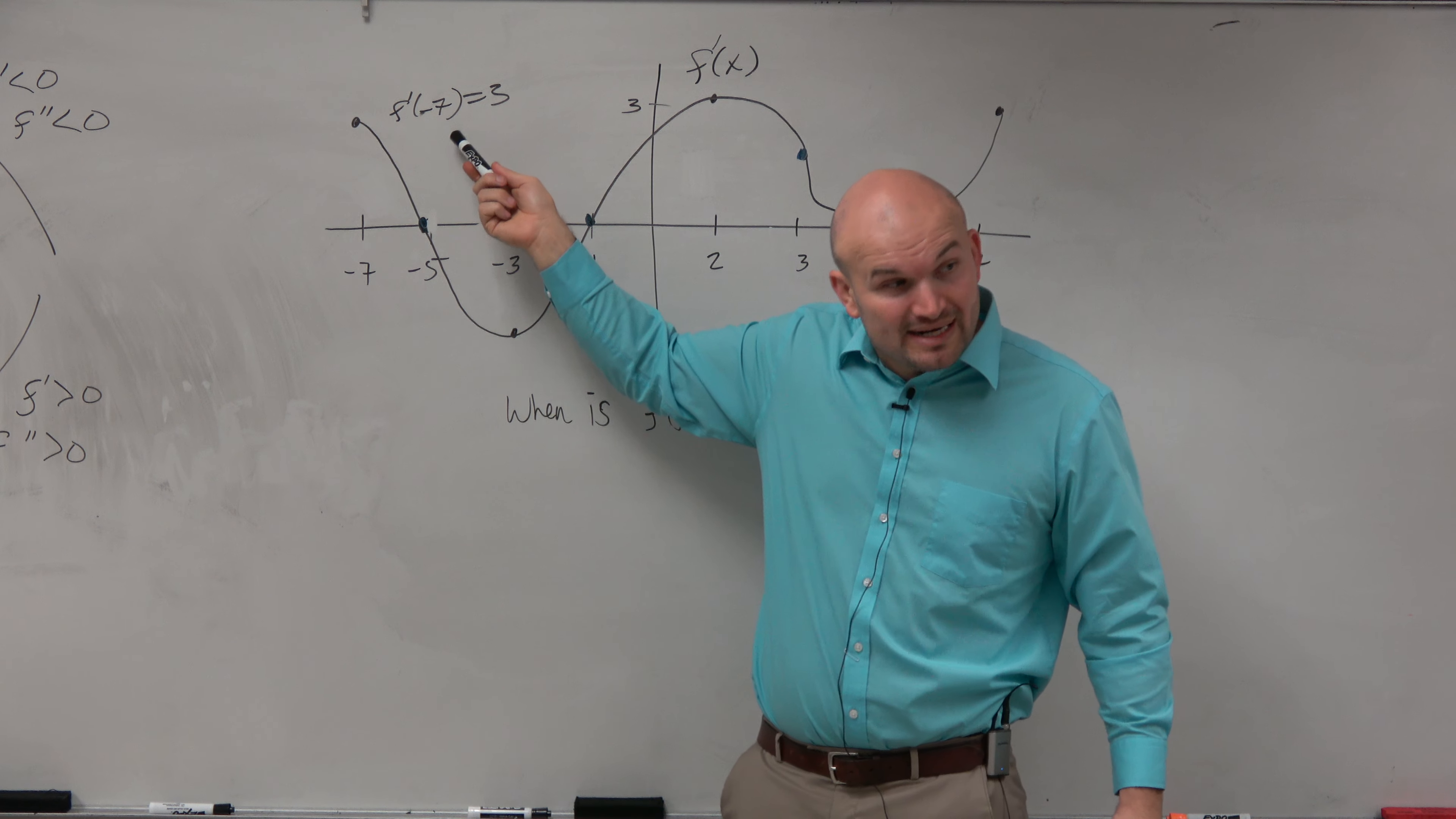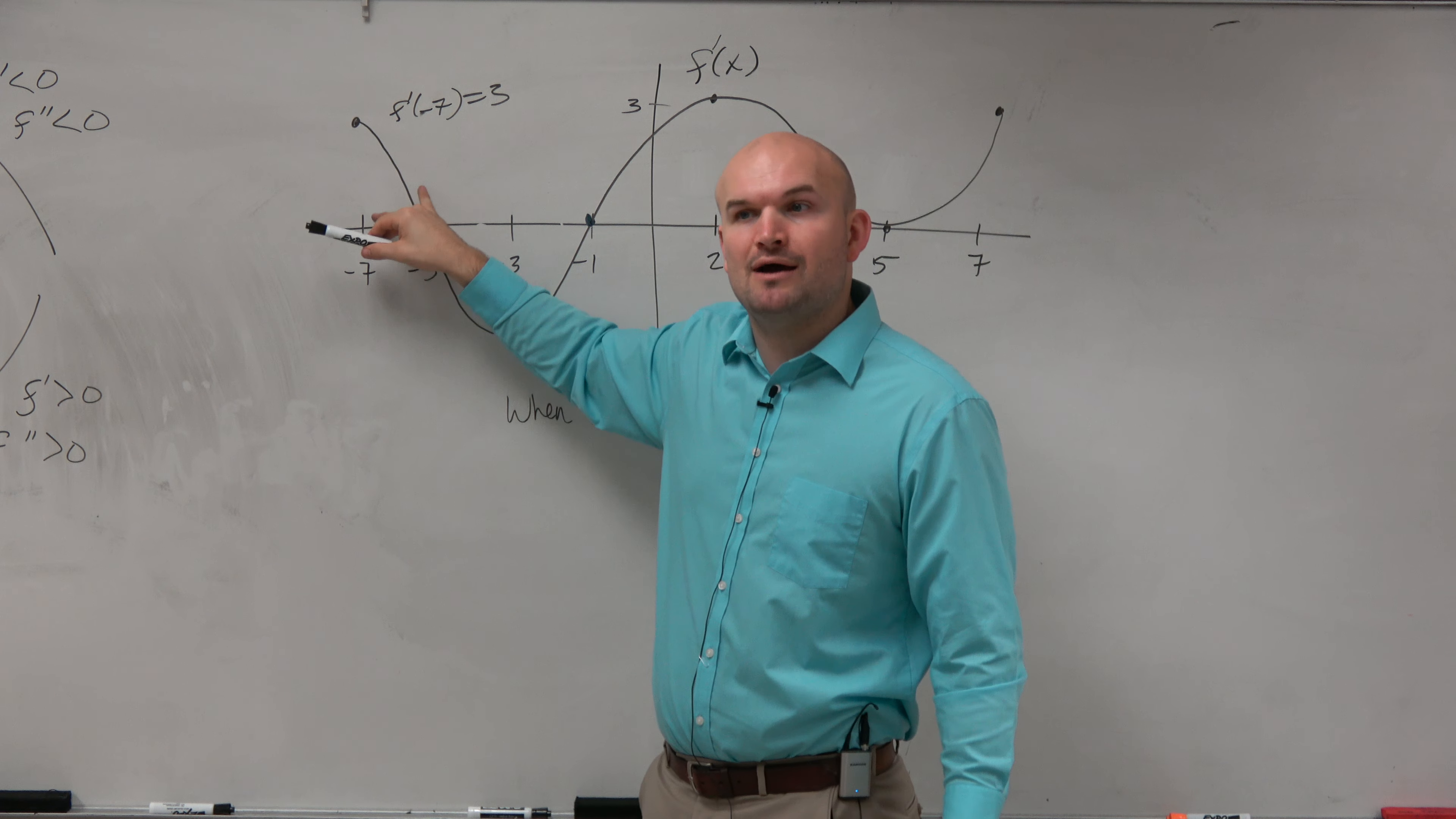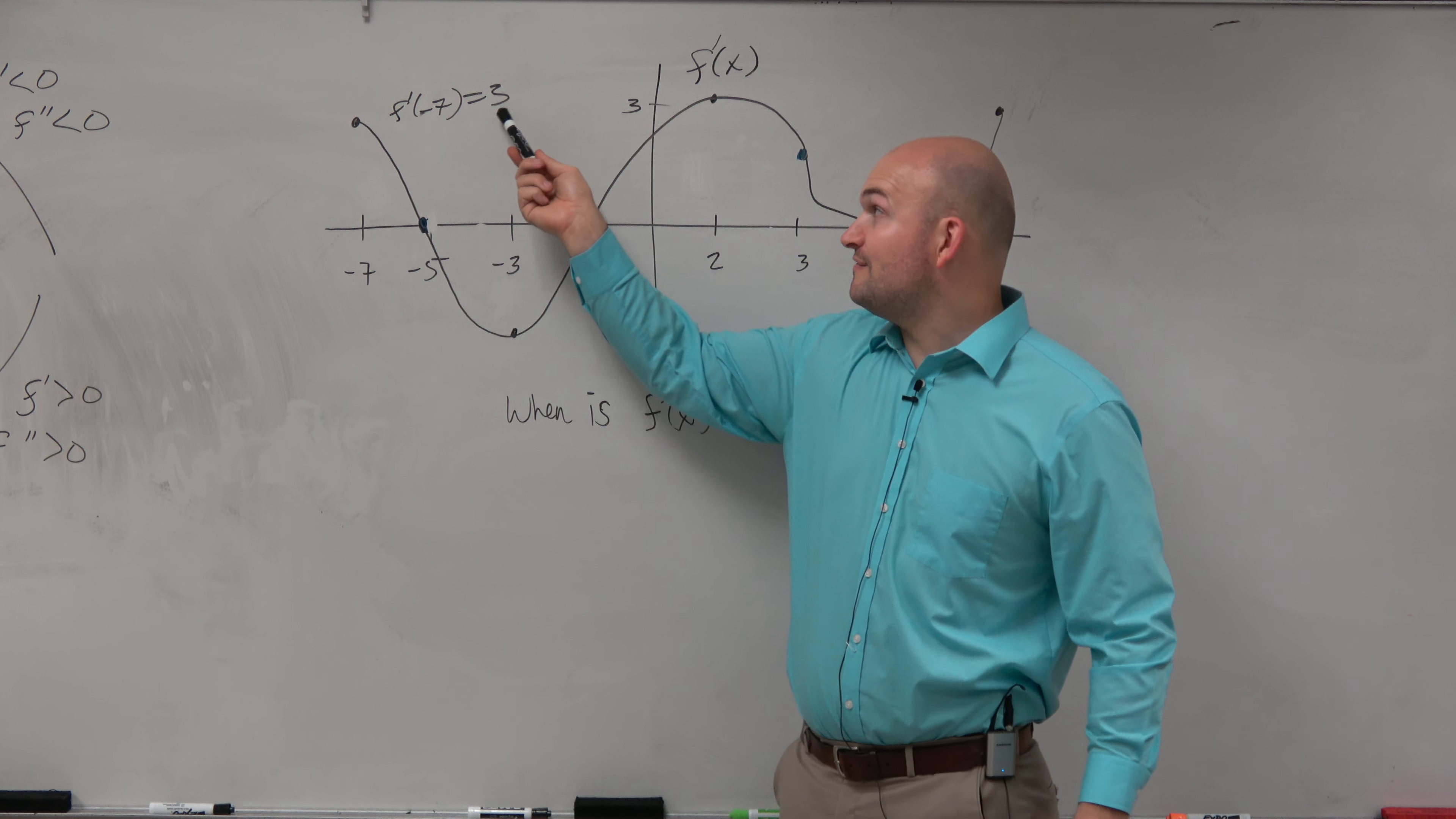Positive. 3 represents the slope of f of x at that value, right? The slope is positive. Now again, you could look at the slopes of f prime of x, but that would be talking about f double prime, which we're not referring to right now. I'm asking you, what is the slope of f of x? The slope of f of x is positive.